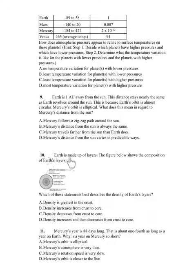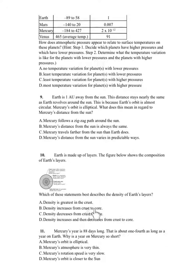Number 10. Earth is made up of layers. The figure below shows the composition of Earth's layers. Which of these statements best describes the density of Earth's layers? A. Density is greatest in the crust. B. Density increases from crust to core. C. Density decreases from crust to core. D. Density increases and then decreases from crust to core.